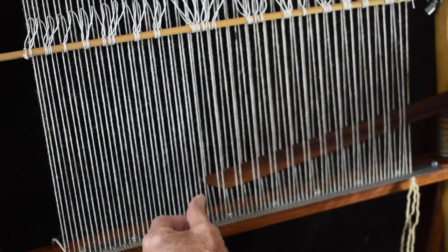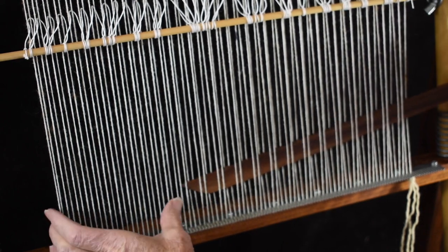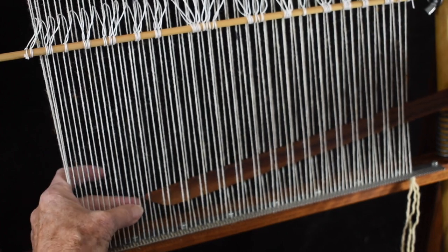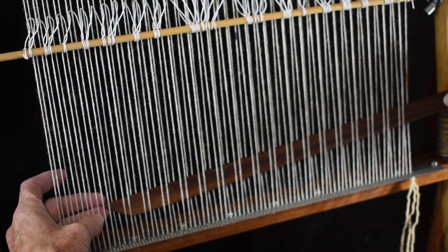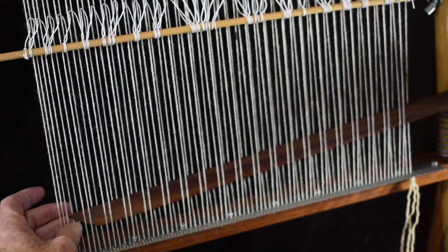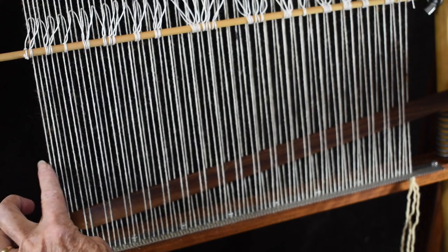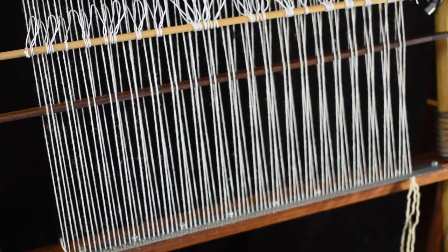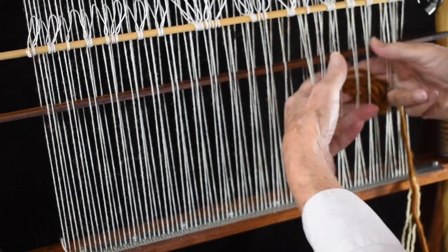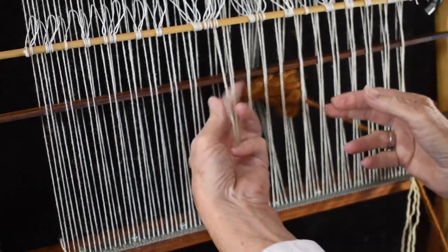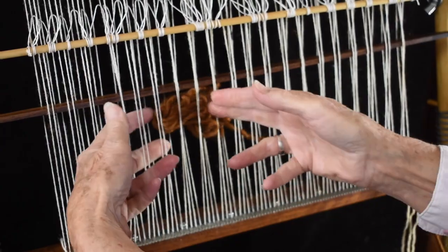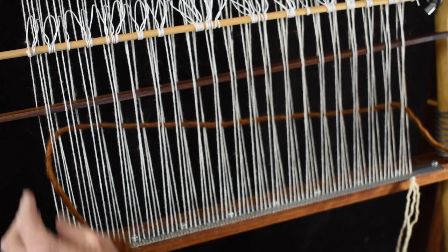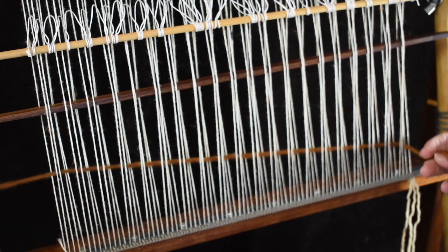So I'm just going to go with my batten over and under pairs. And the last one will be a single because we have an odd number of warps. So turn your batten on its side and then just run your yarn through the shed. You can make little butterflies or you can use long pieces of yarn or you can put it on a needle.